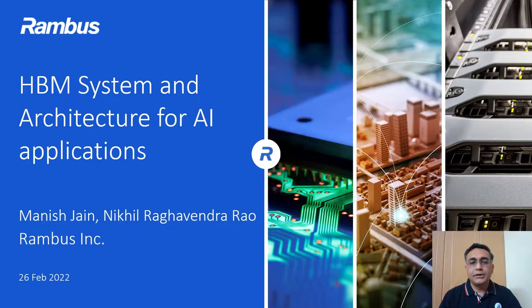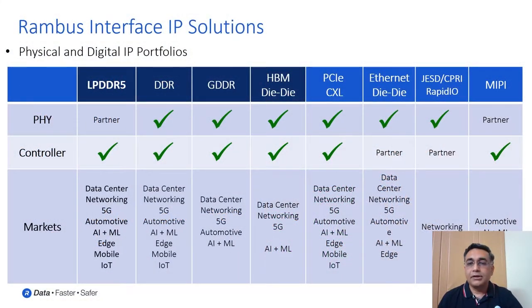Good afternoon, ladies and gentlemen, esteemed colleagues and students. Welcome to this Track 2 tutorial on HBM system and architecture for AI applications by Mr. Manish Jain and Mr. Nikhil Ragavendra Rao. I'll briefly introduce the speakers and hand over to Mr. Jain. Hello everyone, welcome to this presentation. Today we are going to talk about HBM system and architecture for AI applications. My name is Manish Jain, I am Senior Director at Rambus. Along with me today is Nikhil Rao, who is Principal Engineer Architecture. We'll have a Q&A session at the end. Nikhil and I work in Rambus Interface IP Solutions team. Rambus provides a wide range of high-speed interface IPs, both controller IPs and physical layer IPs.